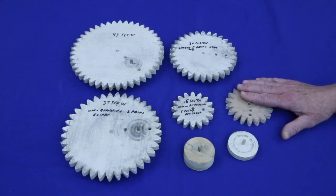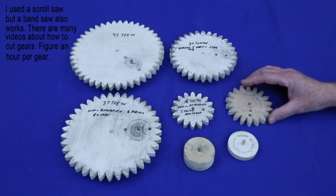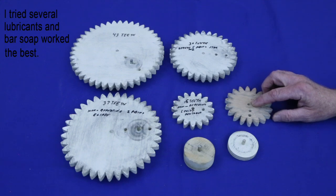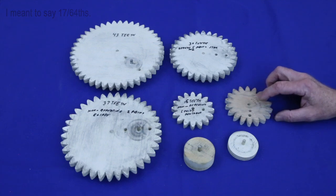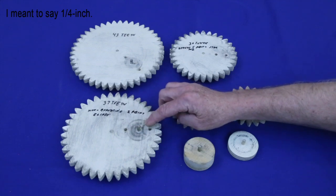Glue this to a piece of half-inch thick plywood. Cut it out, sand the teeth smooth with 220 grit sandpaper, and lubricate them with a light coat of bar soap. The pictures will have the center of each gear marked. Drill a 33-64-inch diameter hole at the marked center and remove the paper patterns.